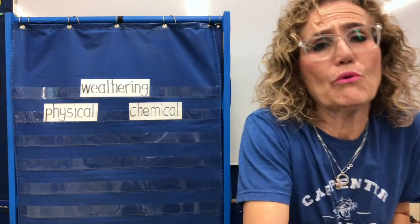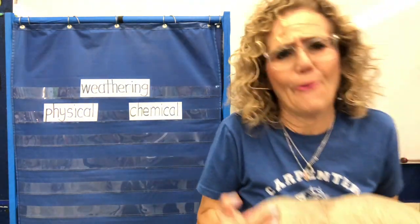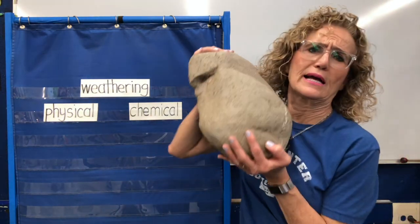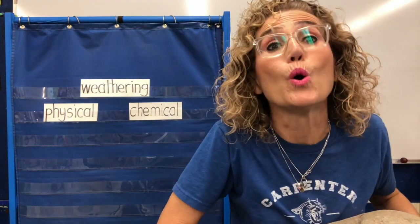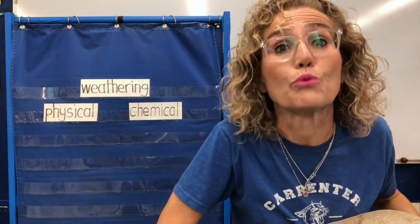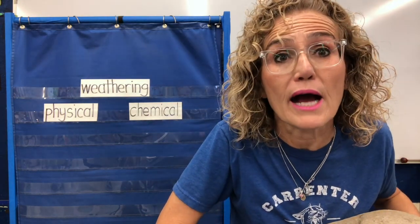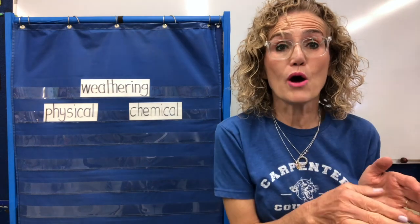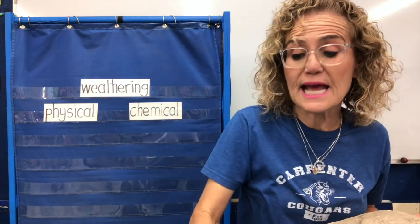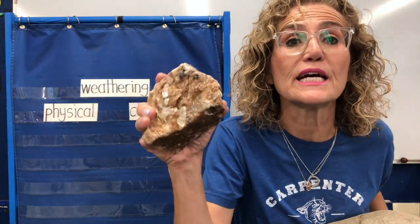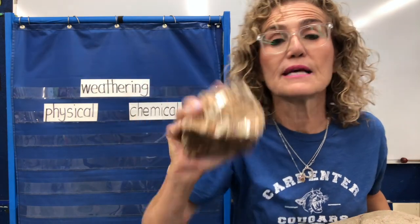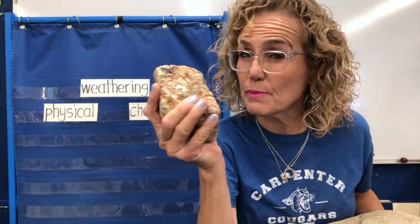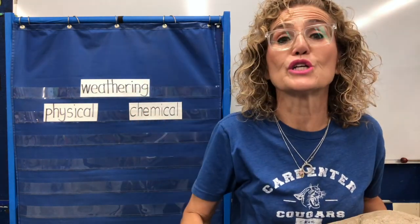So I can take a really big rock like that — that's a boulder, it's a really big rock. And I can break it into smaller pieces. The next size down is called a cobble. A rock about the size of a grapefruit is called a cobble.